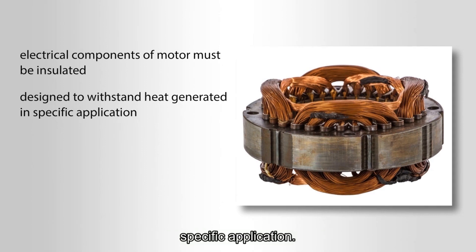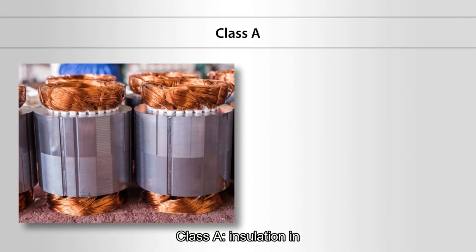'Specific' means something designed or made for one particular reason. 'Application' is another way of saying use, so 'specific application' means to be used in a very special situation. 'Class' means type or group — so a Class A motor could also be described as a Type A or Group A motor.